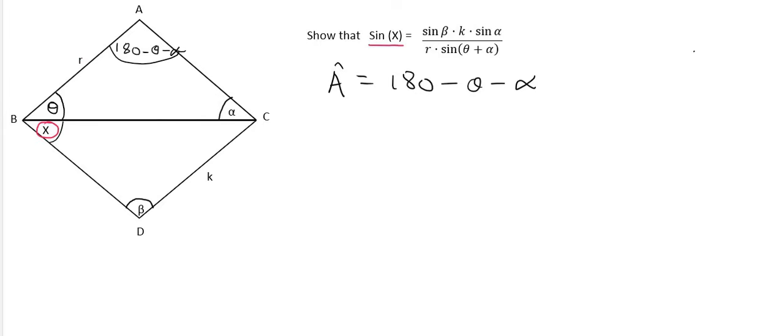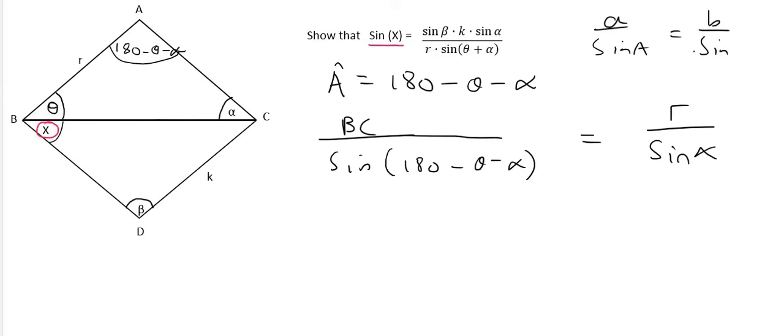So now we can use the sin rule. So we can say that BC over the sin of its angle which is the 180 minus theta minus alpha is going to be equal to r over the sin of angle alpha. Okay so you know where I'm getting that from. That's just using the normal sin rule, a over sin A is equal to b over sin B. Okay so that looks good.